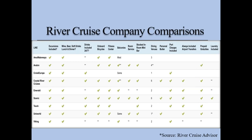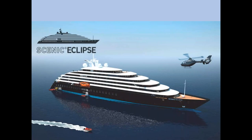This chart is done by rivercruiseadvisor.com. You can see very quickly that Scenic is the ultimate when it comes to all-inclusive and extra features, with Emerald right above it, which price-wise competes with others that have fewer check marks. This is a great site to visit and download this comparison chart — it's a really nice tool for you to have as an agent.